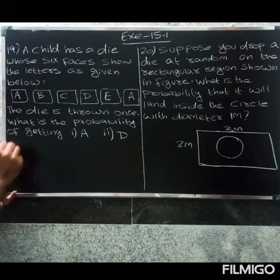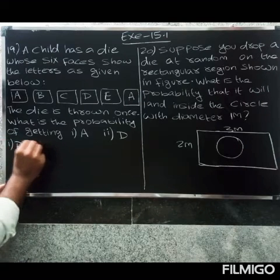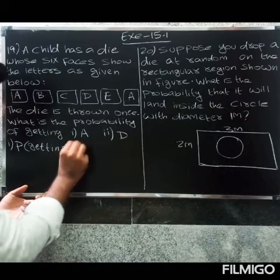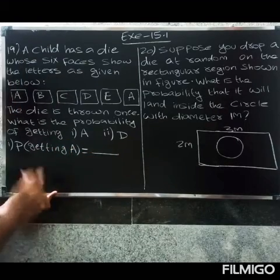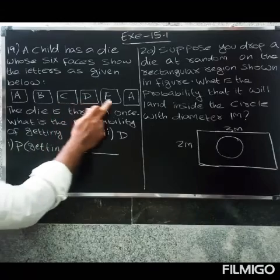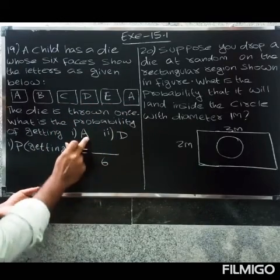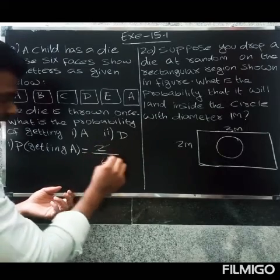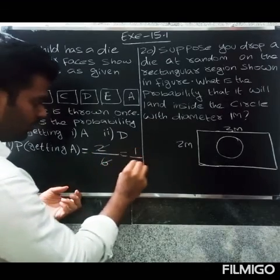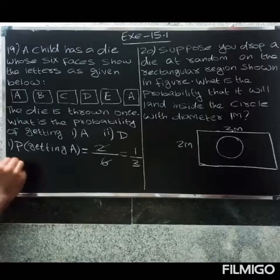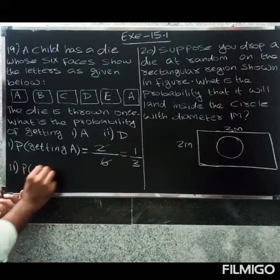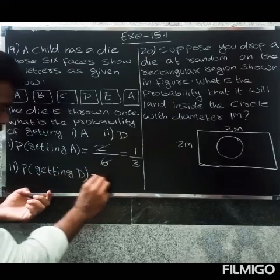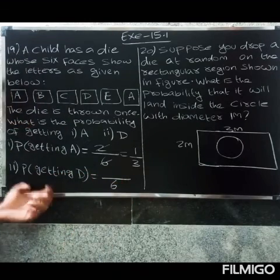First, the probability of getting A. The total number of faces is six — one, two, three, four, five, six. A appears two times, so the probability of getting A is 2 divided by 6, which equals 1 divided by 3.